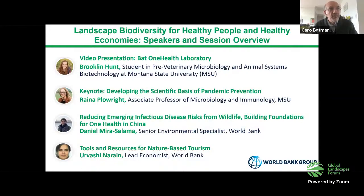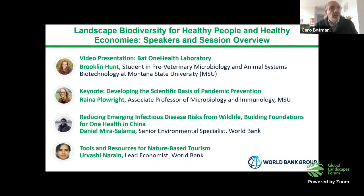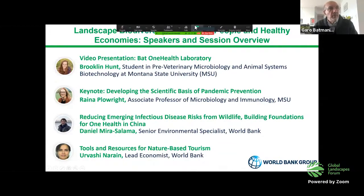This group is spread across five continents and has ongoing field studies in Australia, Bangladesh, Madagascar, and Ghana. It focuses on WHO priority pathogens emerging from bats into humans, including Henipa viruses and coronaviruses, as well as other wildlife pathogen systems with human health and conservation implications. Later we will hear from Brooklyn Hunt, a student at Montana State University and research assistant to Dr. Plowright, who will give us a tour of their laboratory and a window into their field work. Then we hear from Daniel Mira Salam from the World Bank — a senior environmental specialist based in Beijing — about how a One Health approach is helping reduce the risk of zoonotic diseases in China.